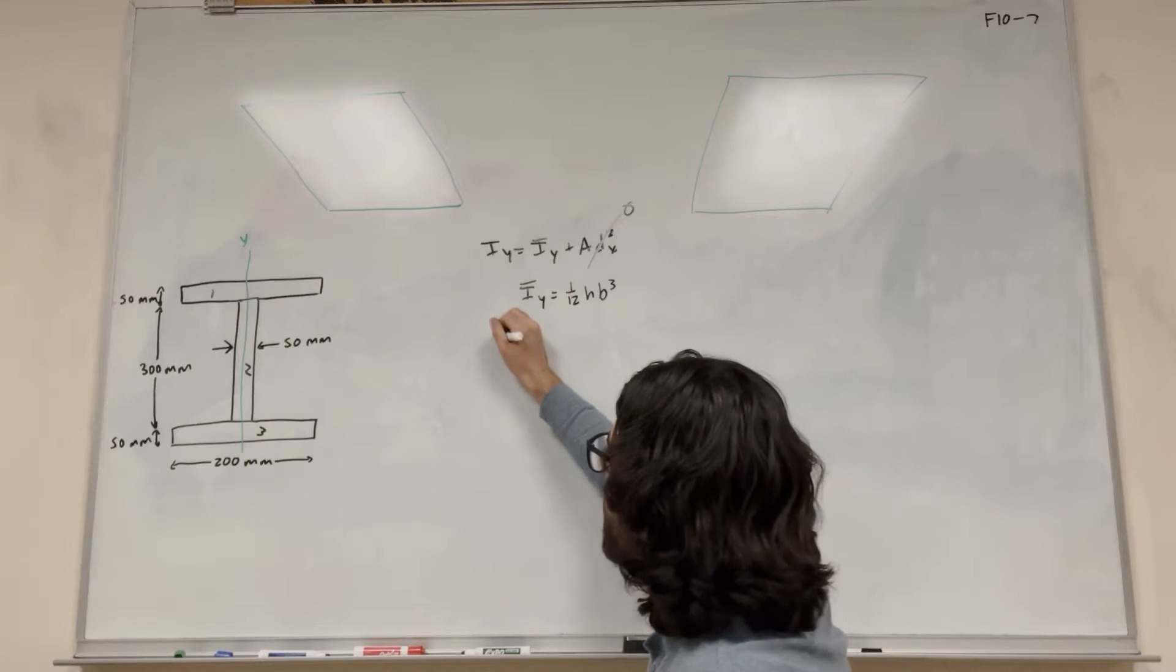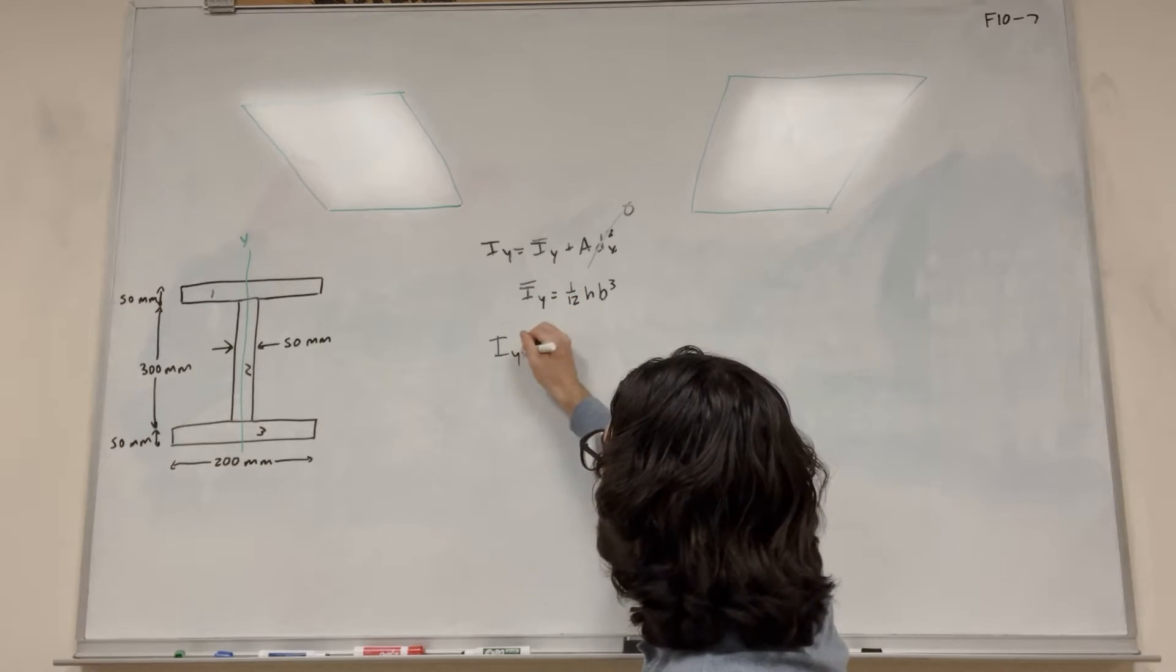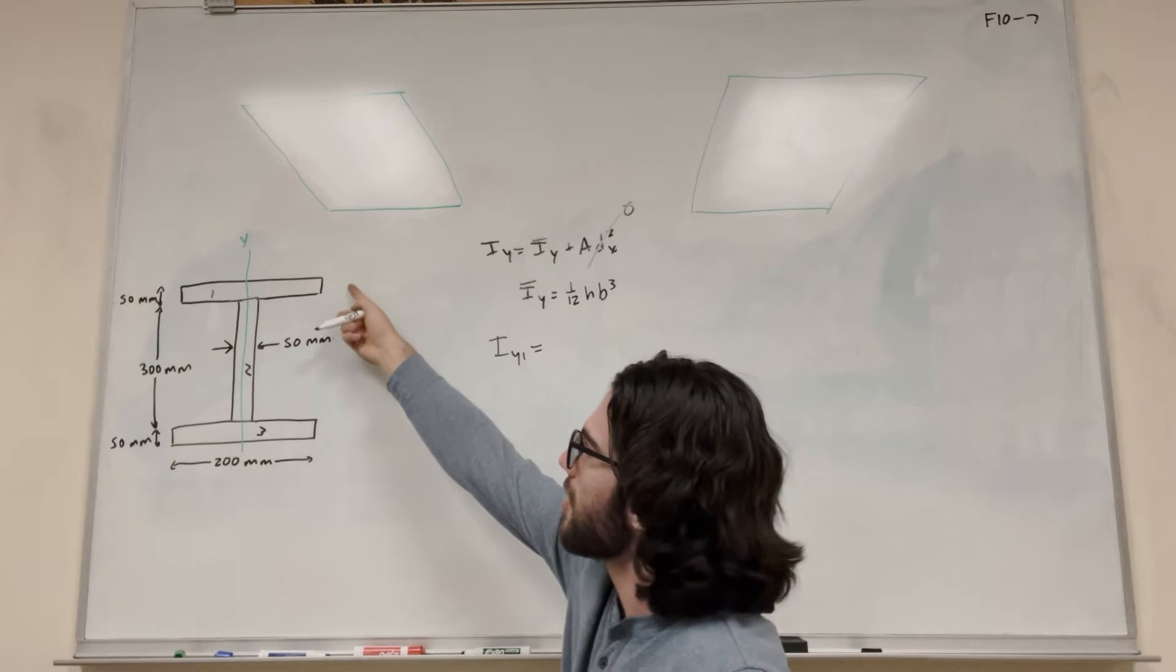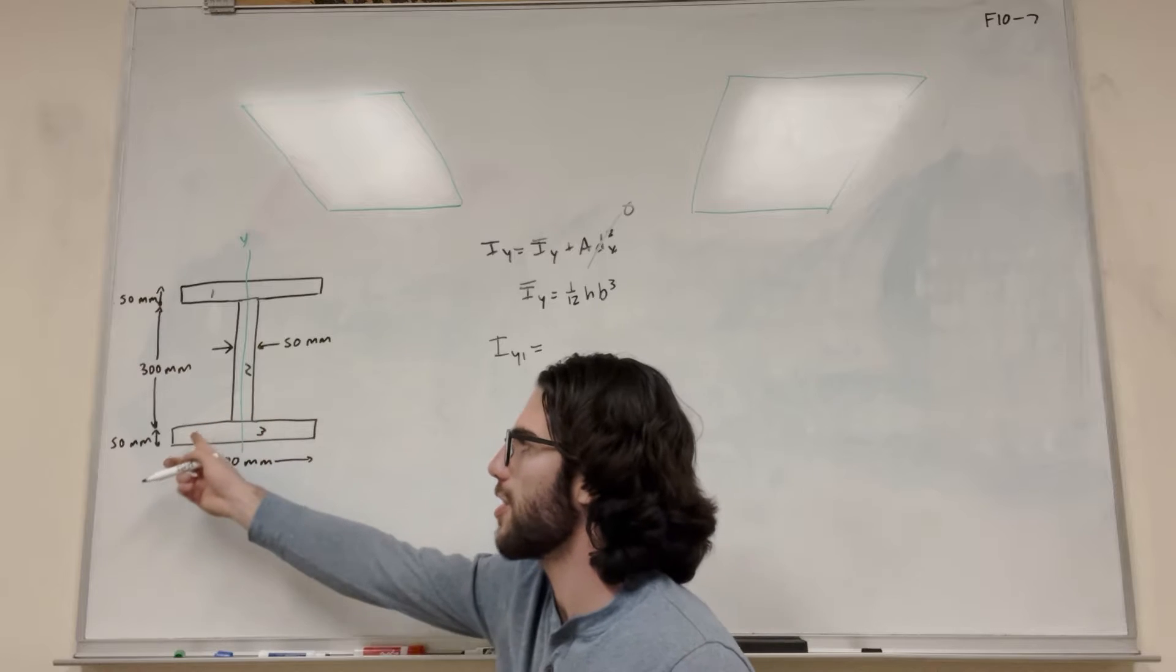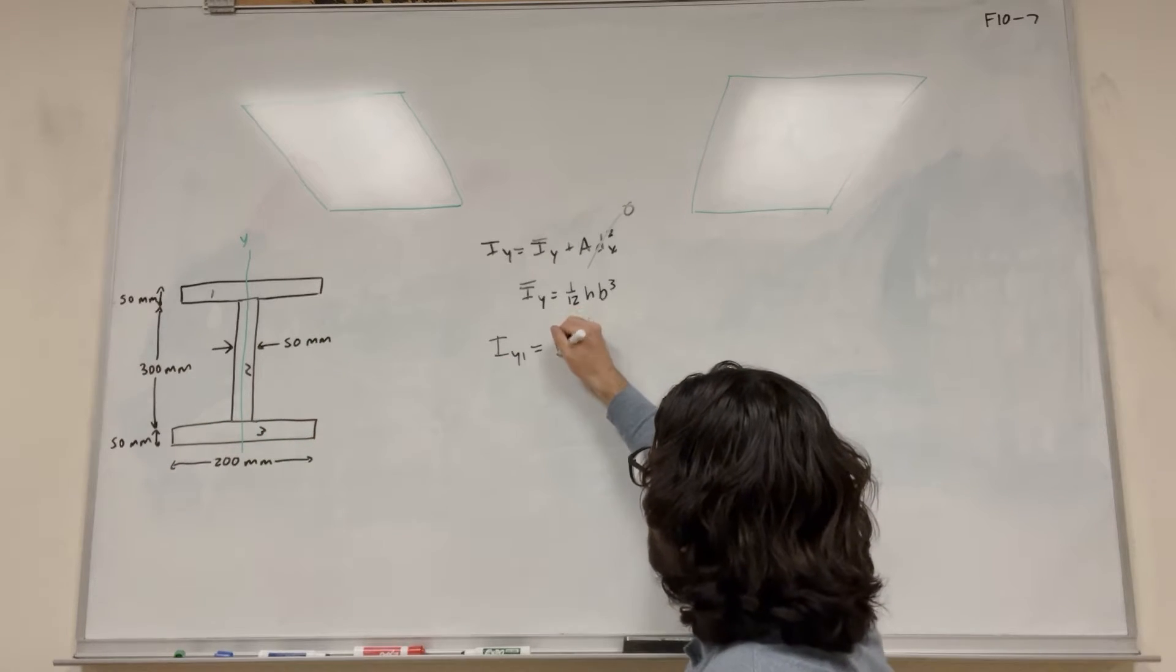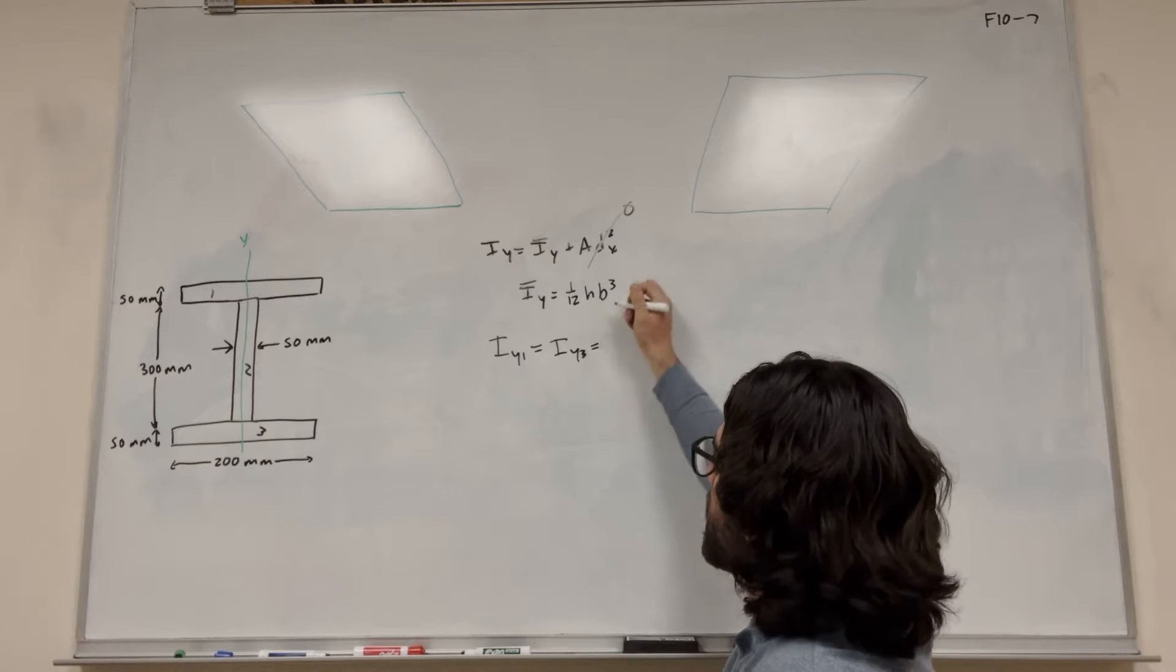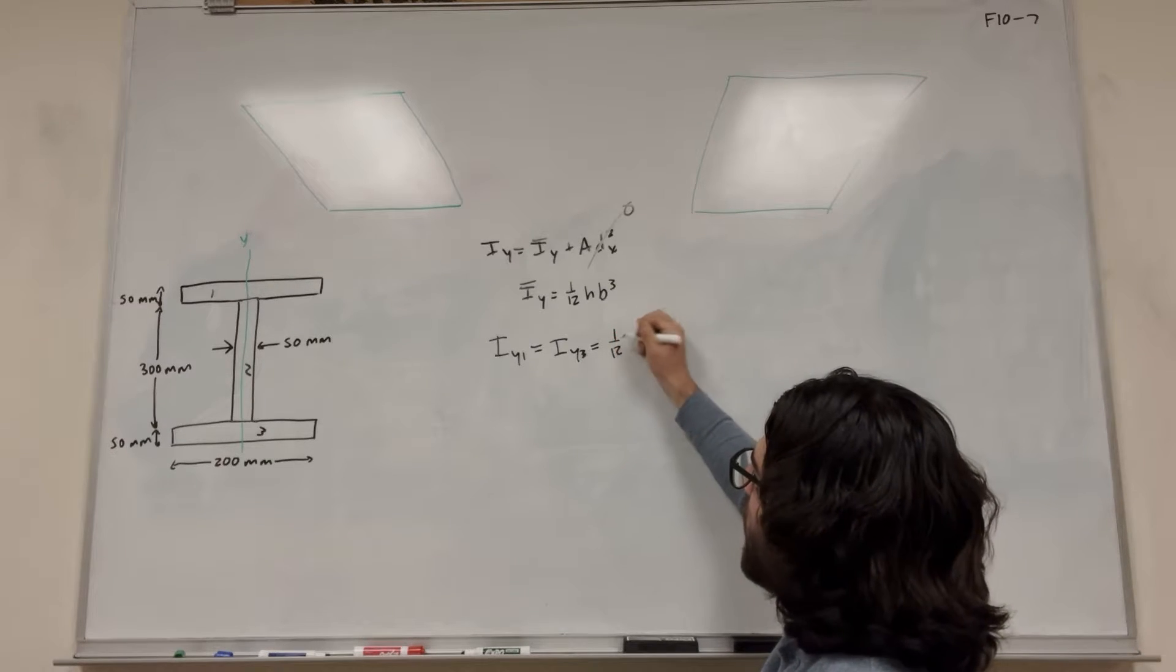Let's go ahead and find it for 1, 2, and 3. So I-bar y of 1 - this is the top shape - what we're going to notice is this around the y-axis is going to be the same as 3 around the y-axis. So we can say this is equal to I-bar y of 3. Let's do it. So it's 1/12 height times base.